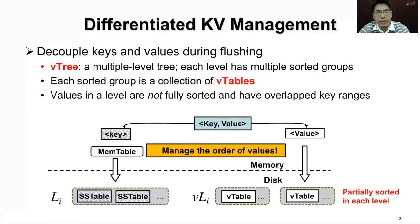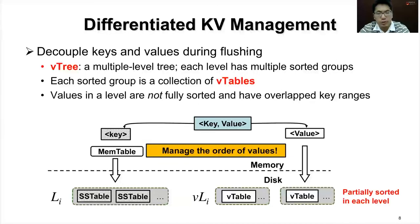In our differentiated key-value management, we decouple keys and values during flushing. Keys with the locations of values are stored in the LSM tree, and the values are stored in V-tables, which are similar to SSTables in LSM tree but store values according to the ordering of keys. Based on V-tables, we build a V-tree, which is also a multi-level tree. Each level has multiple sorted groups, and each sorted group is a collection of V-tables. Values in a level are only partially sorted and have overlapping key ranges.